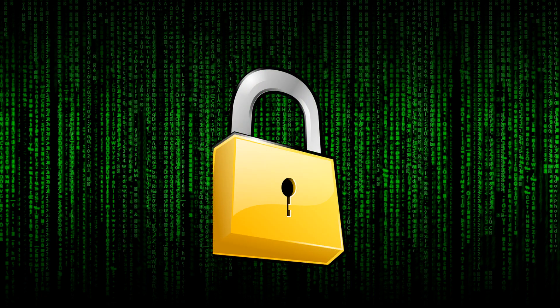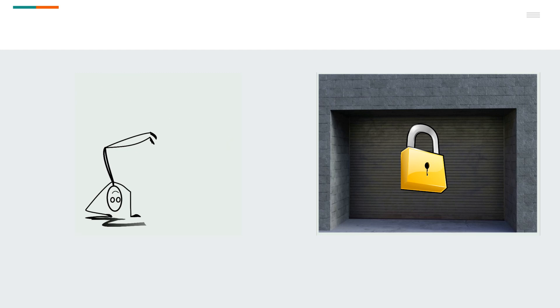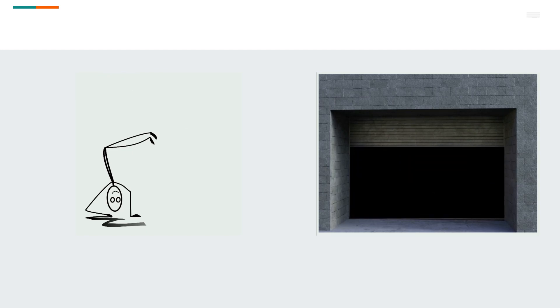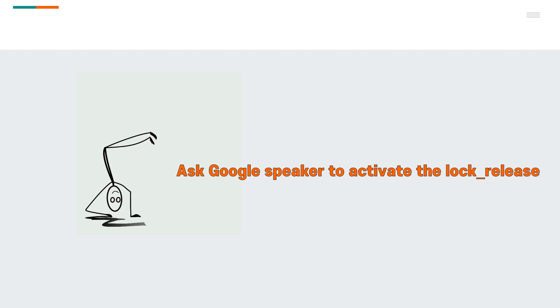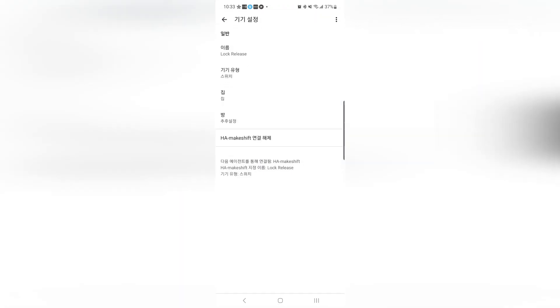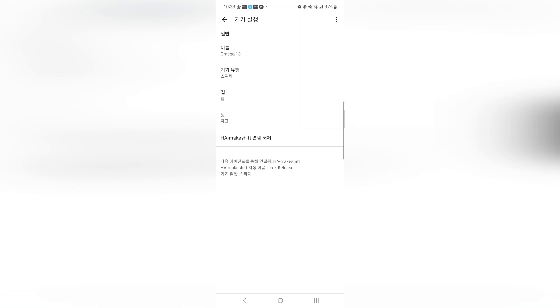The most crucial thing among these is a virtual locking device made with software logic. When this lock is engaged, even if you give a voice command to the Google speaker to open the garage door, the door will not open. To release the lock, lock release must be enabled first. If you ask the Google speaker to open the garage door while this lock release is enabled, then it will open. To enable the lock release, you need to command the Google speaker to turn on or activate the entity name. The entity name should be a secret word only known to your family — I'll name this device the Omega 13, from the movie Galaxy Quest.